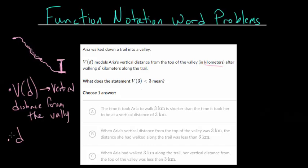Now, what do we think D represents? So notice that this is after walking D kilometers along the trail. So it looks like D is a distance, and it's the distance along the trail.